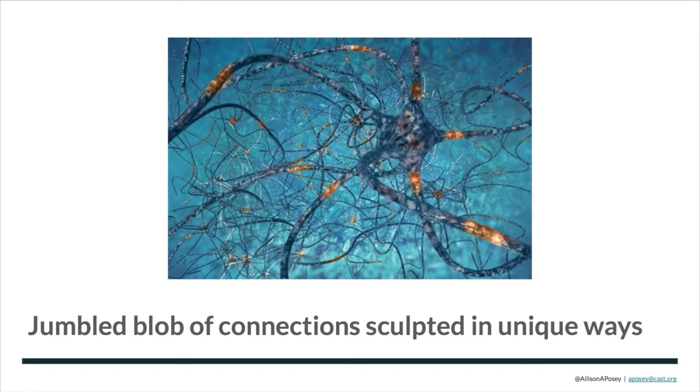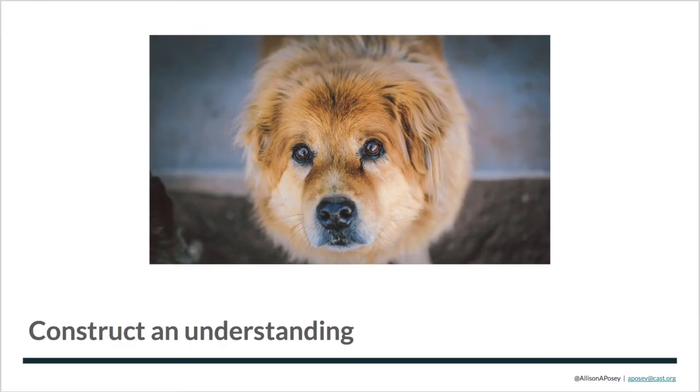So even before we were born, our brain was like a jumbled blob of connections. We each started with our own unique blob of connections. And based on how we interact with the world around us, that blob began to get sculpted in very unique ways. So take, for example, the first time you experienced a dog. How many of you have experienced a dog?